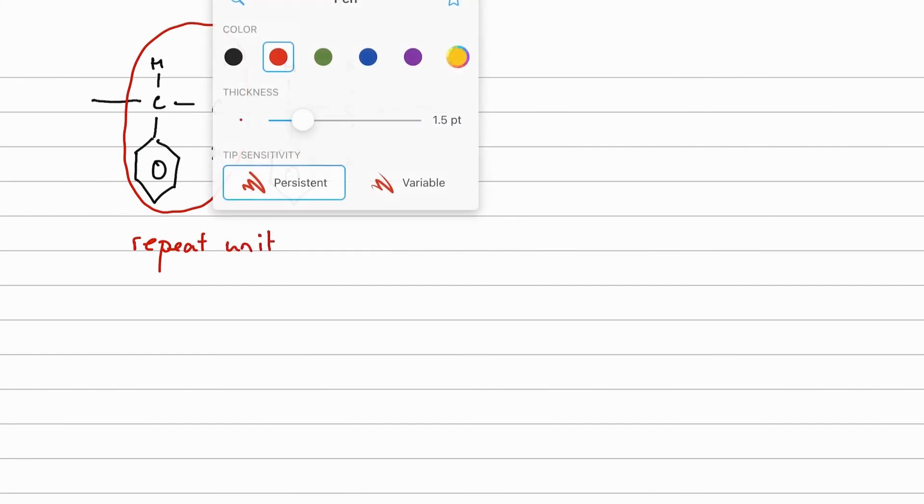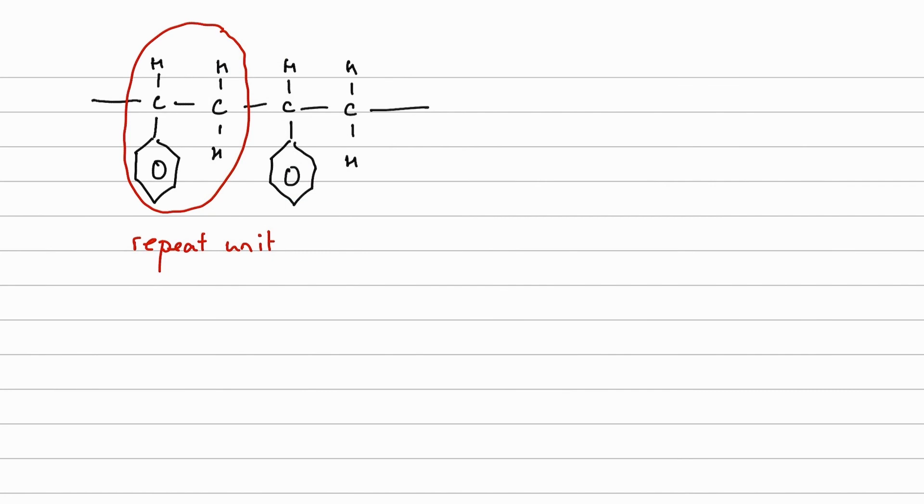So I've identified one repeat unit. So in order to turn that into a monomer, all I need to do is make it an alkene. So it would be carbon, double bond carbon.